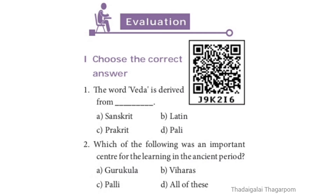Question 1: The word VEDA is derived from — A. Sanskrit, B. Latin, C. Prakrit, D. Pali. The correct answer is A, Sanskrit. The word VEDA is derived from Sanskrit.